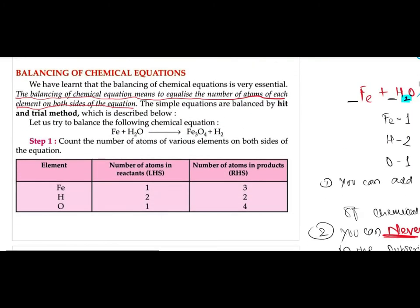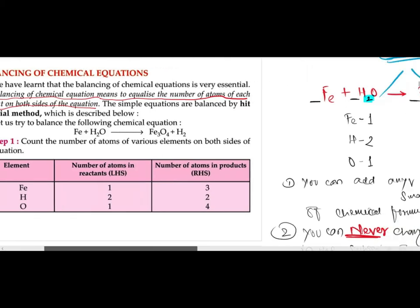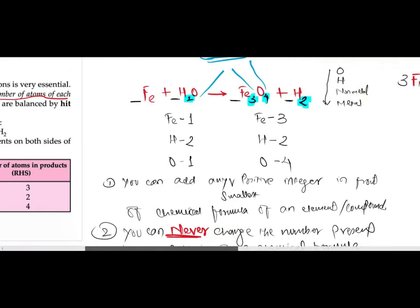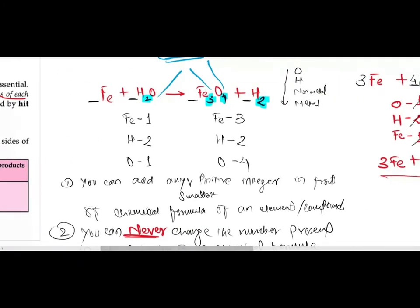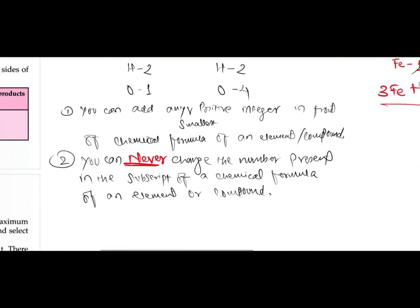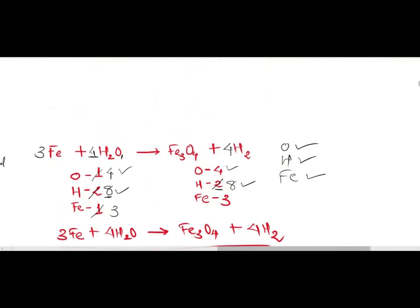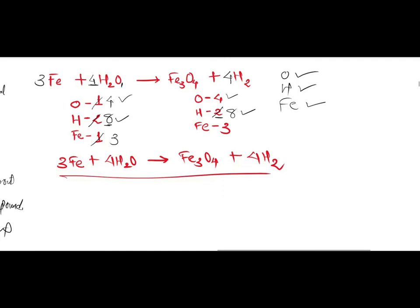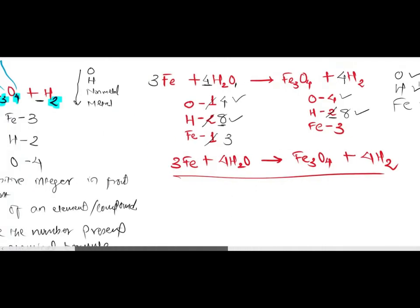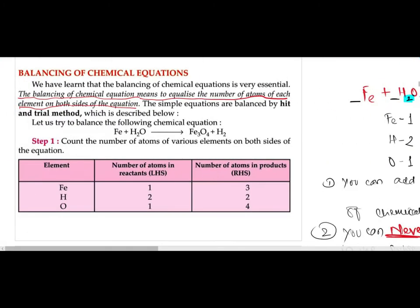Then we studied balancing of chemical equations, taking the example of iron plus water giving iron oxide plus hydrogen. We studied some rules and the method of balancing in depth — what can be changed, what cannot be changed — everything was discussed in detail.